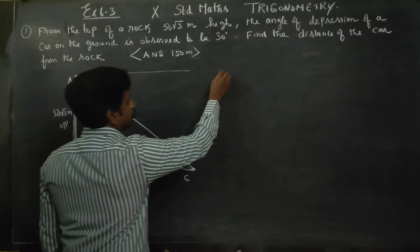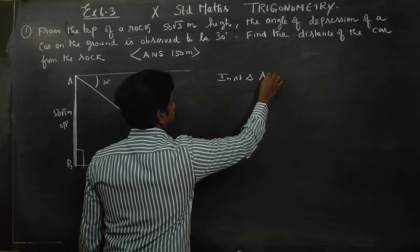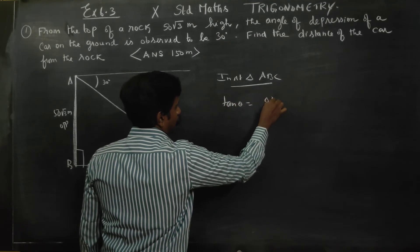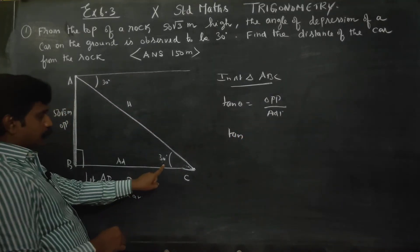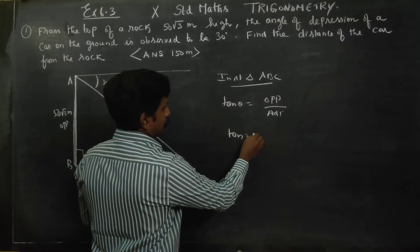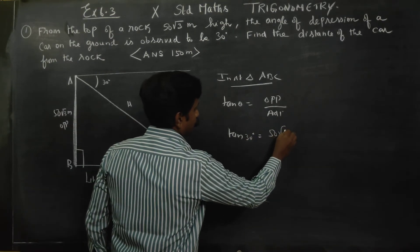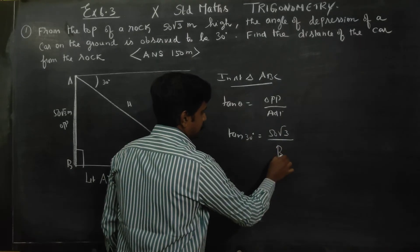I am going to use in right triangle ABC, tan theta formula, which is opposite side by adjacent side. Tan 30 degrees is equal to opposite side 50 root 3 by adjacent side BC.